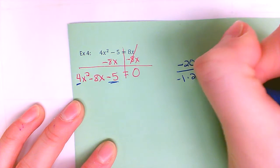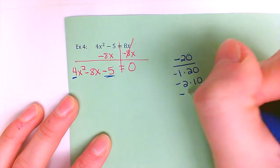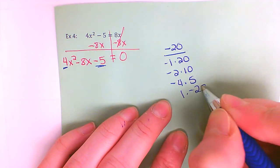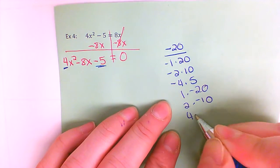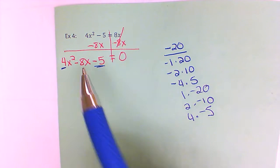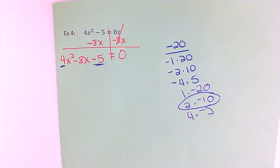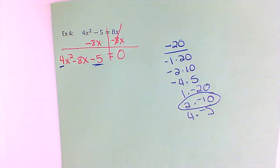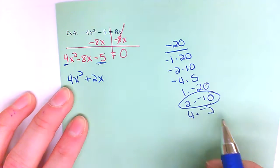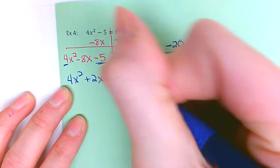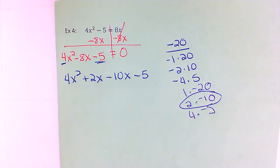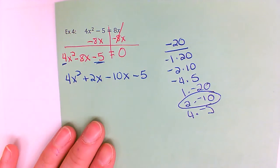Your factors could be negative one times twenty, negative two times ten, negative four times five — or the negatives could be the other way around. You want to pick the pair that adds to give you negative eight. In this case I need positive two and negative ten. We're going to replace the middle term with those two numbers. Just leave the equals zero off until you get to the factoring part if it's confusing you right now.